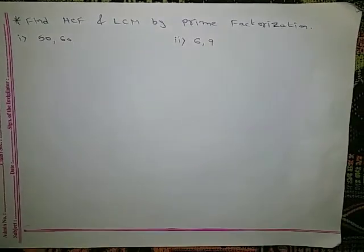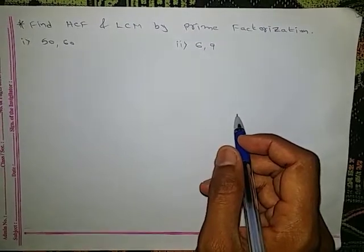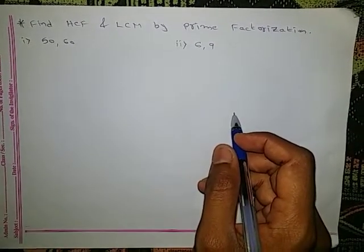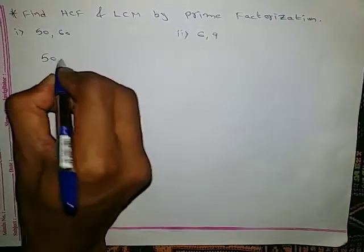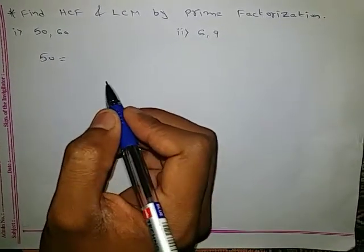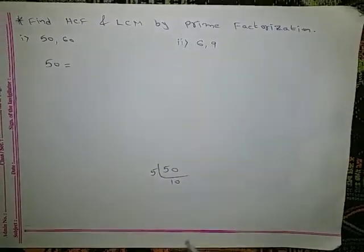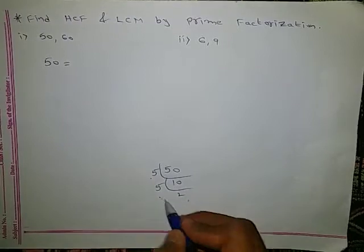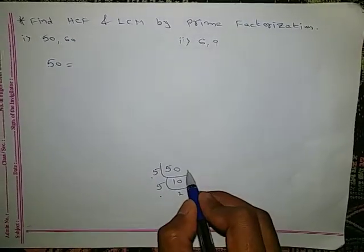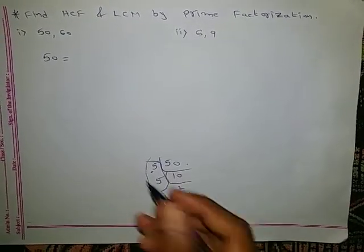Let us check one more question. Till now we did HCF by Euclid Division Process. Now we need to solve HCF and LCM by prime factorization. First, write the prime factors of 50. 50 = 5 × 10 = 5 × 5 × 2. Here 5 is a prime number and 2 is also a prime number. So 50 can be written as 5 × 5 × 2, which is 5² × 2.